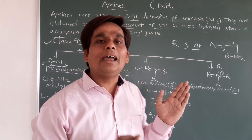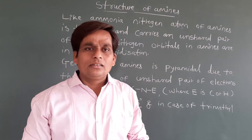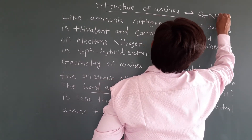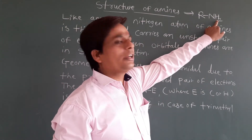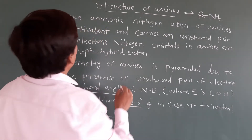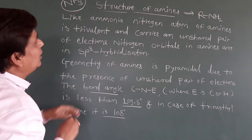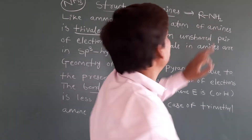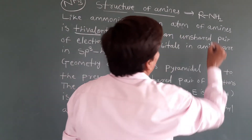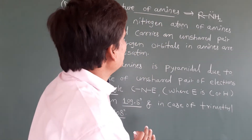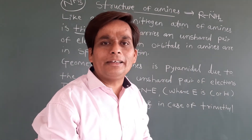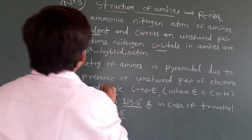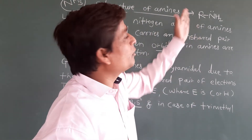Now we will see the structure of amines. Amines have an NH2 group — nitrogen containing two hydrogens and one alkyl group. Like ammonia, the nitrogen atom of an amine is trivalent. It carries an unshared pair of electrons — a lone pair — which does not take part in chemical reactions and does not form bonds. The nitrogen orbitals in amines are sp3 hybridized.